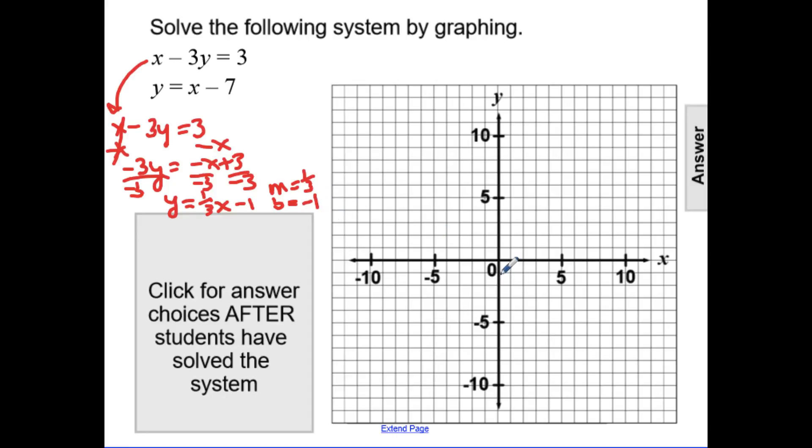We'll begin at 0, negative 1, and move up 1, right 3. Up 1, right 3. Or down 1, left 3. Down 1, left 3. And we'll connect these points to draw our line.